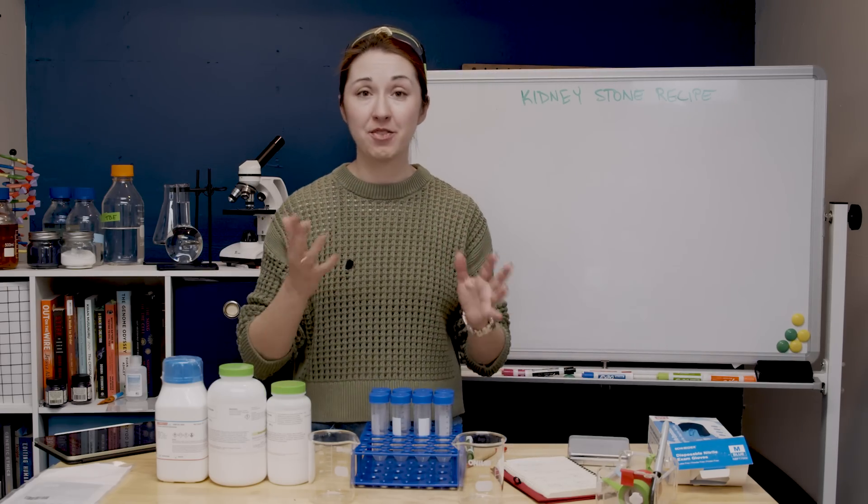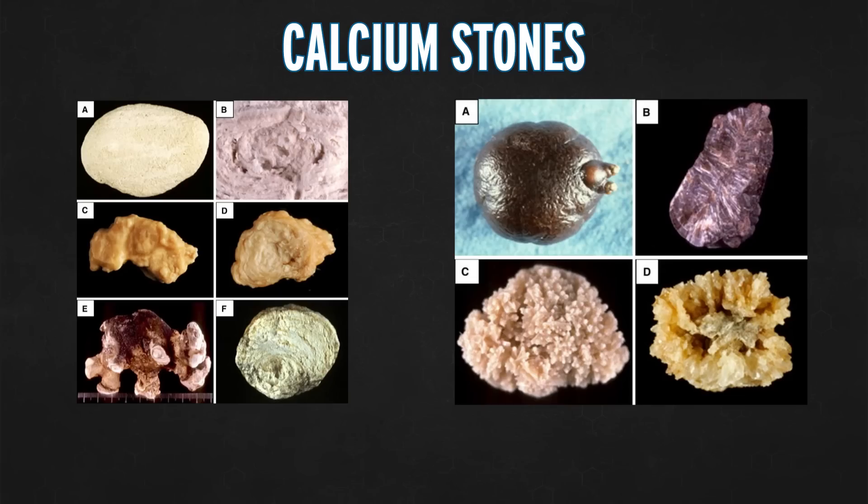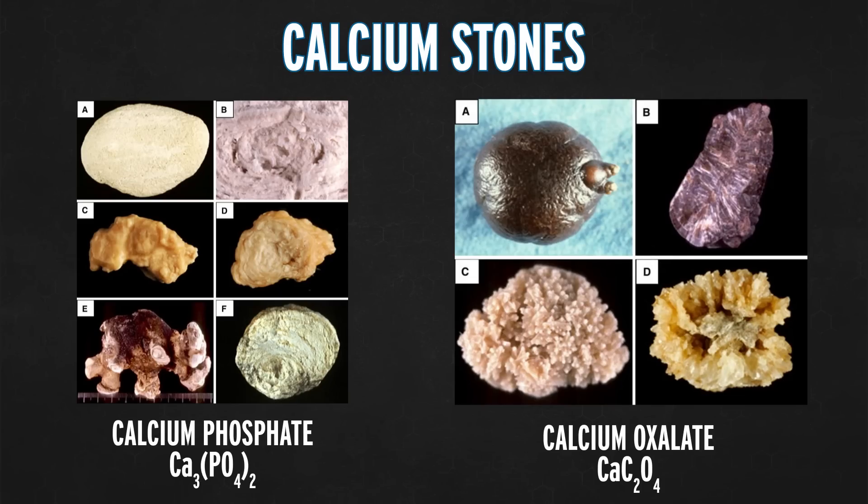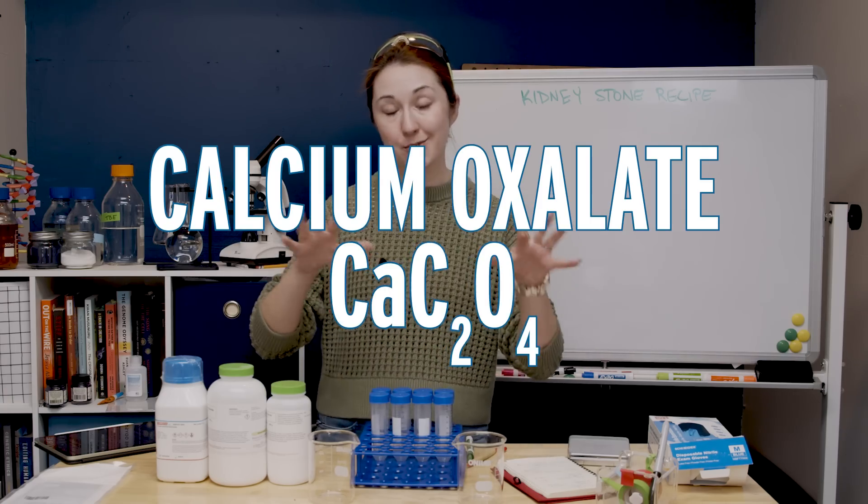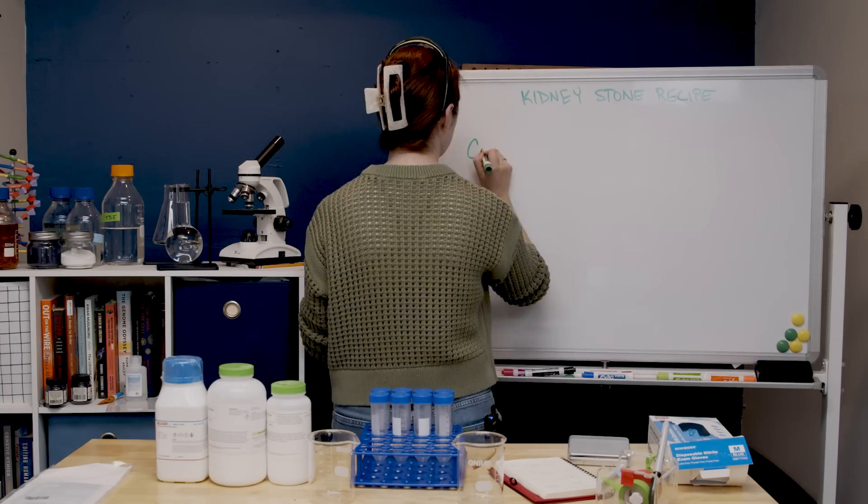What we care about today are the most common type of kidney stones called calcium stones. These are typically things like calcium phosphate or calcium oxalate or sometimes a little bit of both. So what I'm going to be trying to make today are calcium oxalate stones and I had a plan to do this.